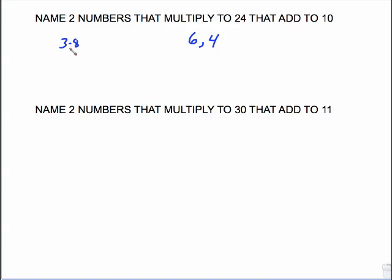3 times 8 gives me 24, but they don't add to give me 10. 2 times 12 gives me 24, but they don't add to give me 10. So this answer is unique. Another set: can you name two numbers that multiply to give you 30 and add to give you 11? That would be 6 and 5. This right here is what factoring boils down to — answering this kind of question.